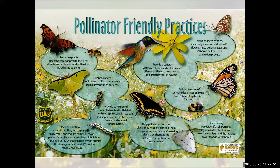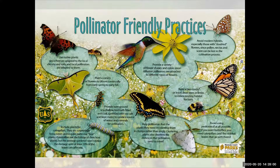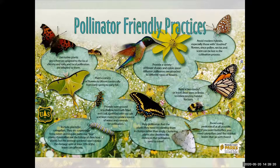Build a bee condo — leave dead trees or limbs to create nesting habitat for bees. Avoid using pesticides if at all possible. You need caterpillars and the nibbled leaves that go with them if you want butterflies. Help pollinators find the plants they need by planting in clumps rather than singly — clustering plants shortens the distance pollinators need to travel. Provide bare ground or a shallow dish filled with soil, sprinkled with sea salt and kept moist to create a source of water and minerals.